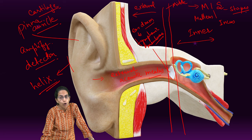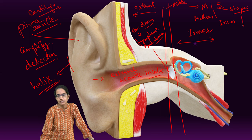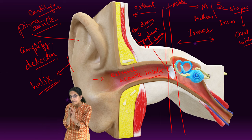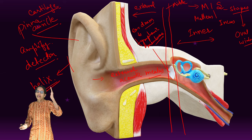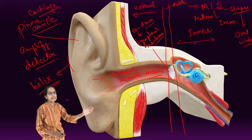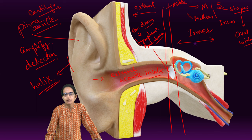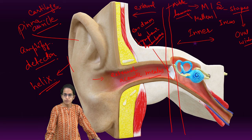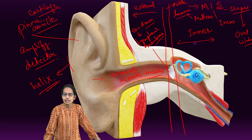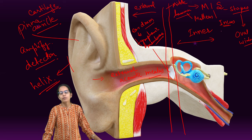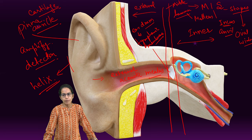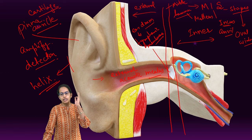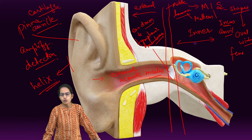Stapes is the smallest bone, and towards the end of the stapes is where you have the oval window. The oval window connects the middle ear to the inner ear; the tympanic membrane connects the external ear to the middle ear. Malleus is hammer-shaped and one of the largest ossicles. Incus is the middle bone, anvil-shaped. Stapes is the smallest bone and opens into the oval window, also known as fenestra ovalis.